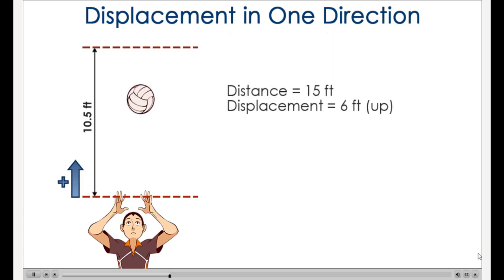Now the distance the ball has traveled is 10.5 feet to the top of the path plus the 4.5 feet down, a total of 15 feet. However, the displacement is only 6 feet since the distance between the starting position and the current position is 6 feet. The direction is still positive, up, since the ball is above the starting position.